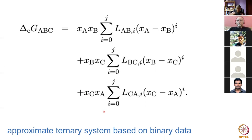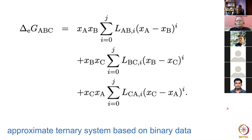Obviously this means that going from binary to ternary systems involves some approximation, since we are simply looking at the end members of the ternary system. Nevertheless it's a good approach when you don't have any data for ternary interactions. If your ternary calculation doesn't turn out to be correct, that indicates you need to generate experimental data, because the whole calculation relies on experimental data.